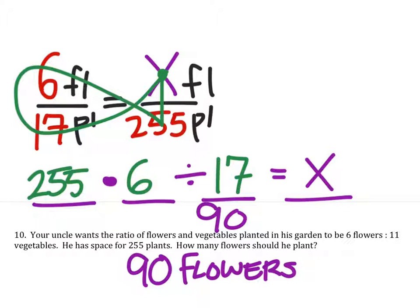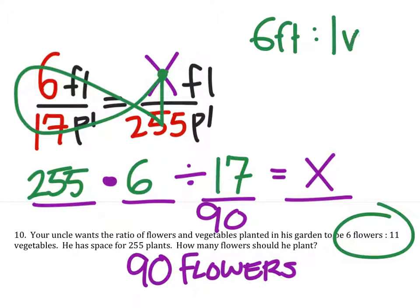So how do we get 17? Right here. Now, if you have 6 flowers to 11 vegetables, then you would add those together to get total number of plants. That's 17 plants.